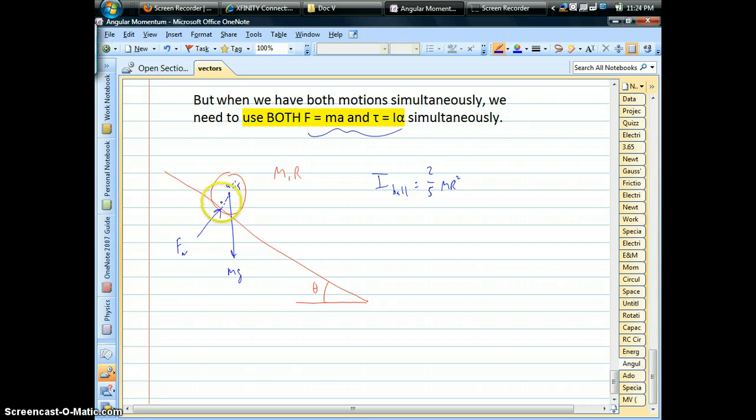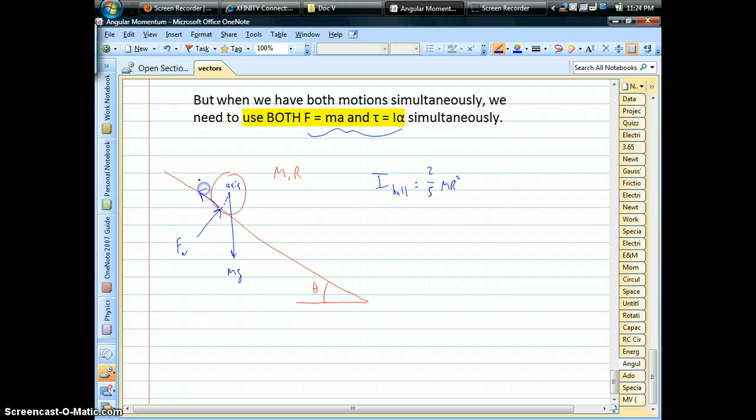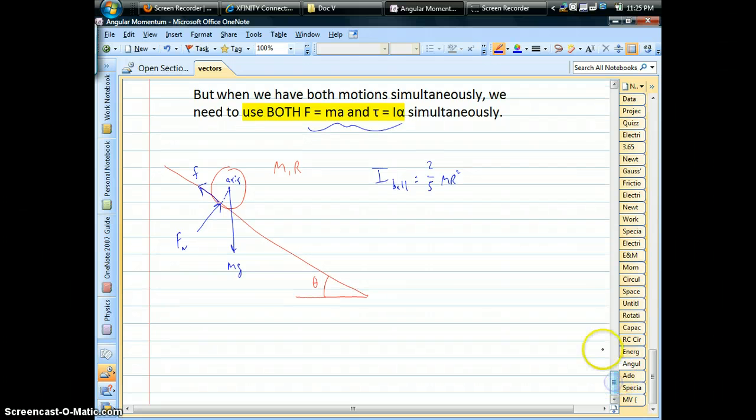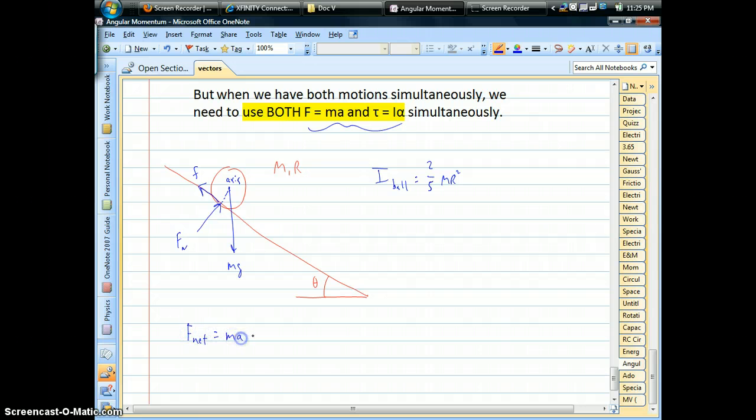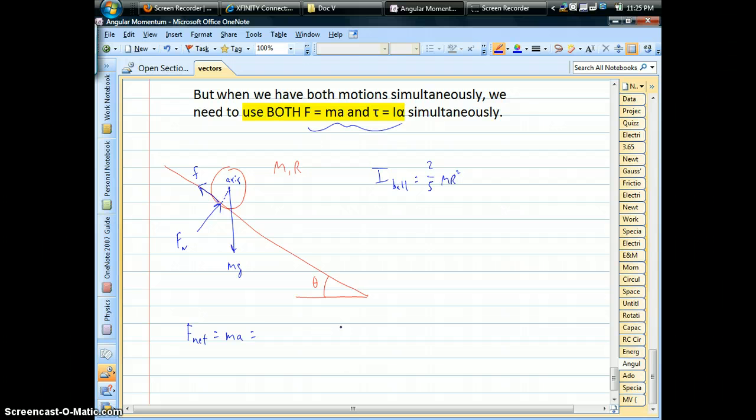So why does it spin? Well, because you have a friction force there acting on the edge, which is causing torque. So the linear equation, F equals ma, is no different than it has ever been for something sliding down a hill. You always have a downhill piece of gravity, mg sine theta. And then you have friction going uphill opposite the acceleration. And so that's the negative force. That's it.